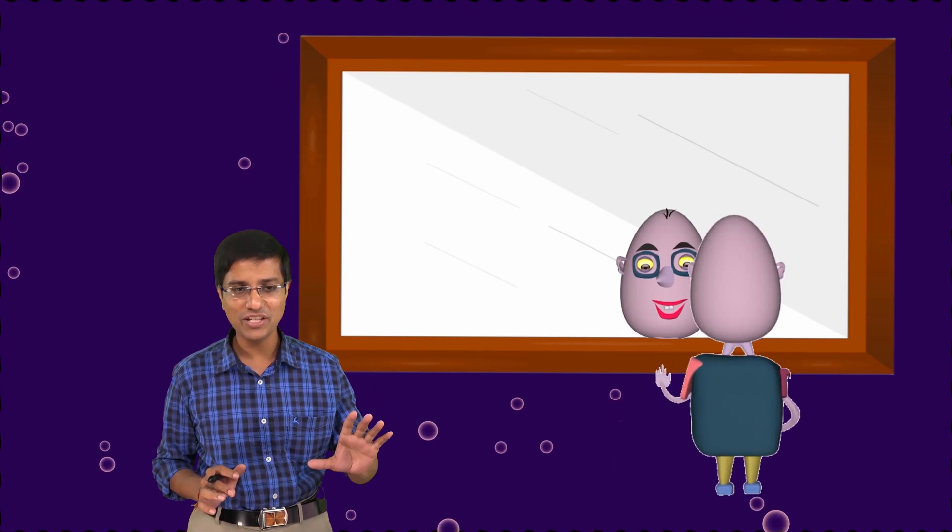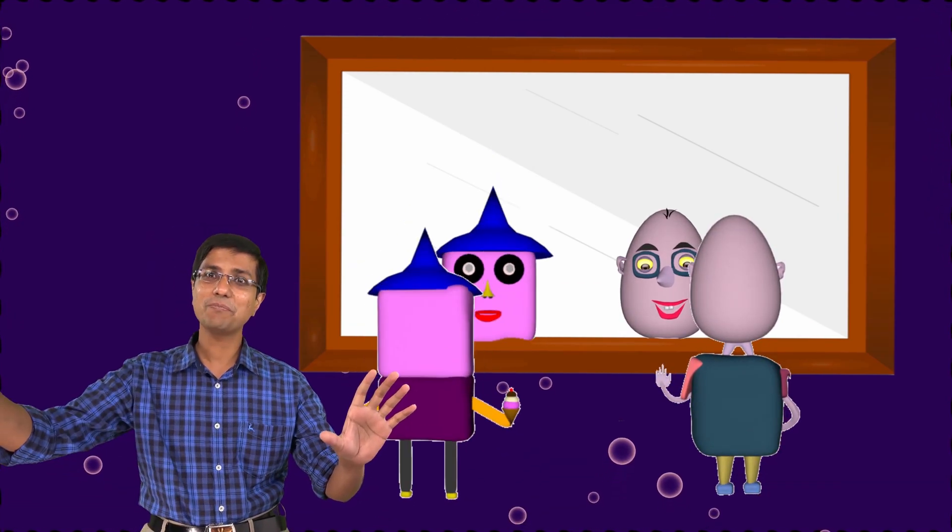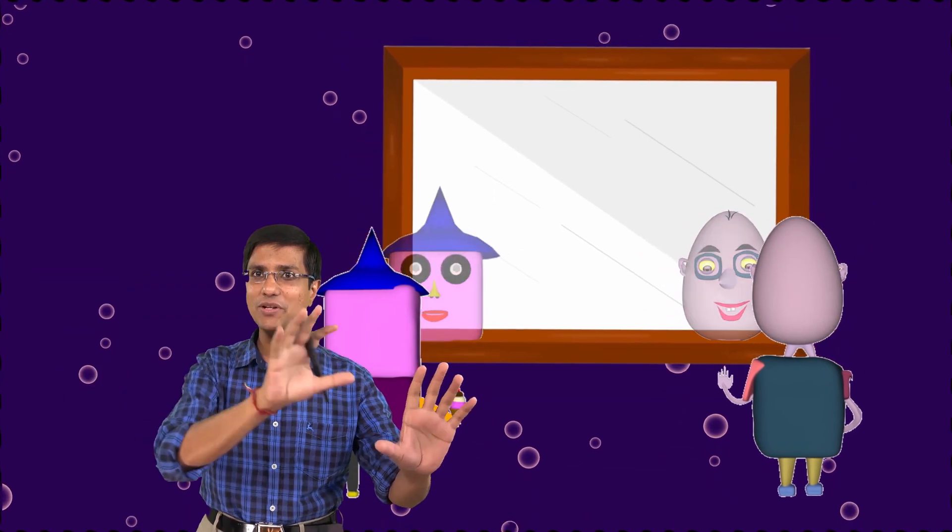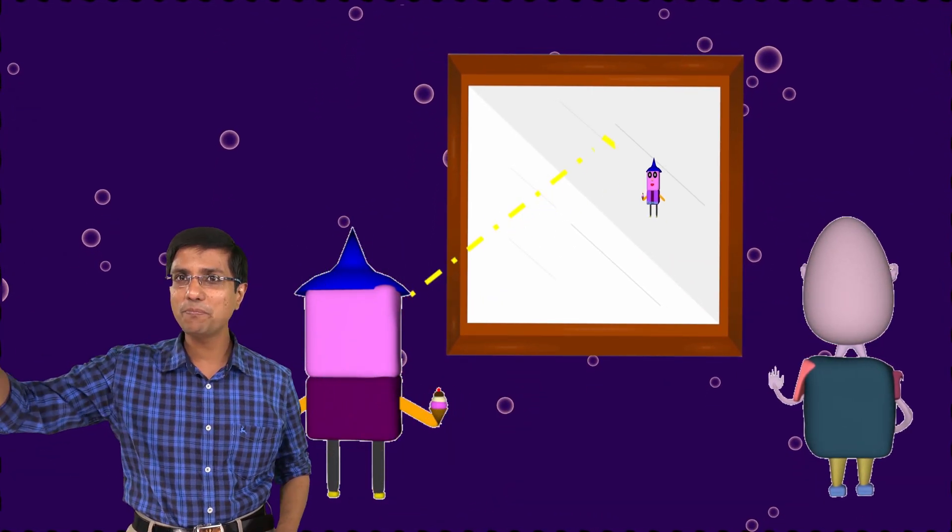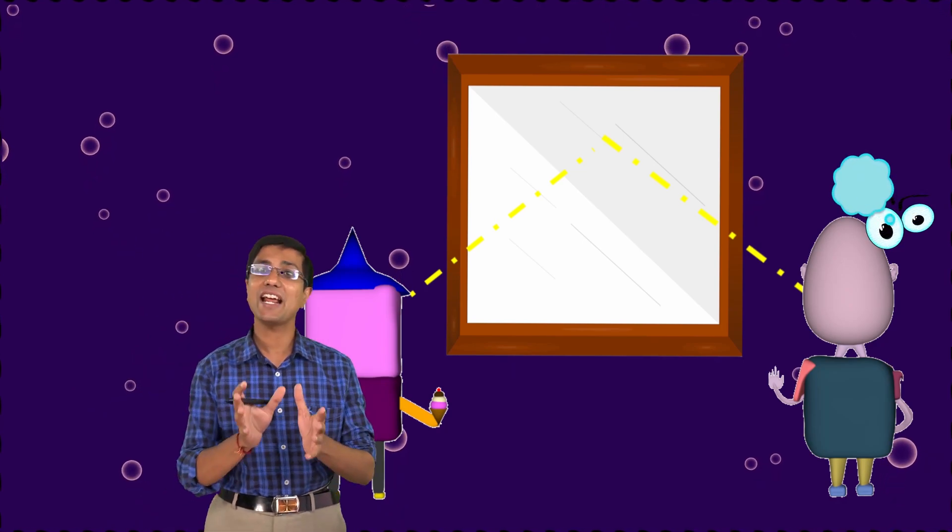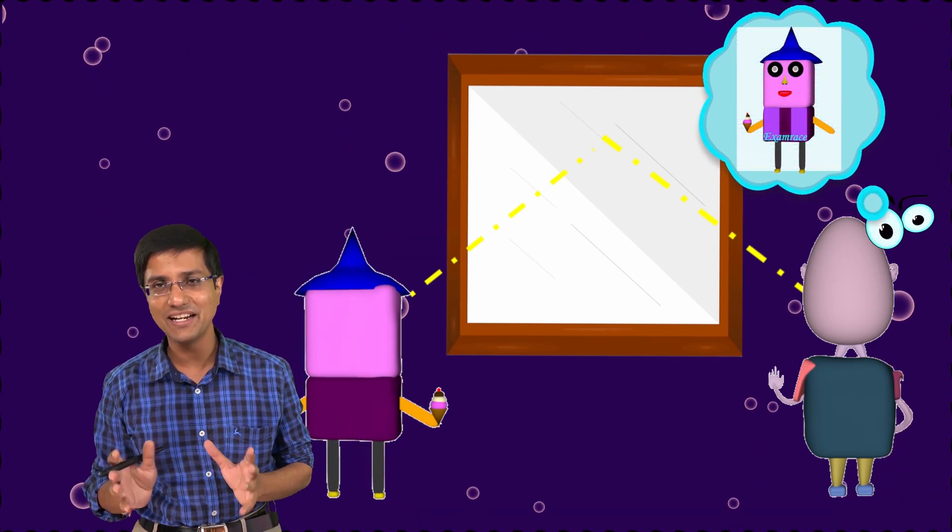One of the things to understand about reflection is that it is symmetric. What does that really mean? It means that if Mr. Eggie, who is standing on this side of the mirror, is able to see Mr. P, who is standing on the other side of the mirror—so he is able to see Mr. P in the mirror—then Mr. P would also be able to see Mr. Eggie in the mirror. That is what symmetric really means.